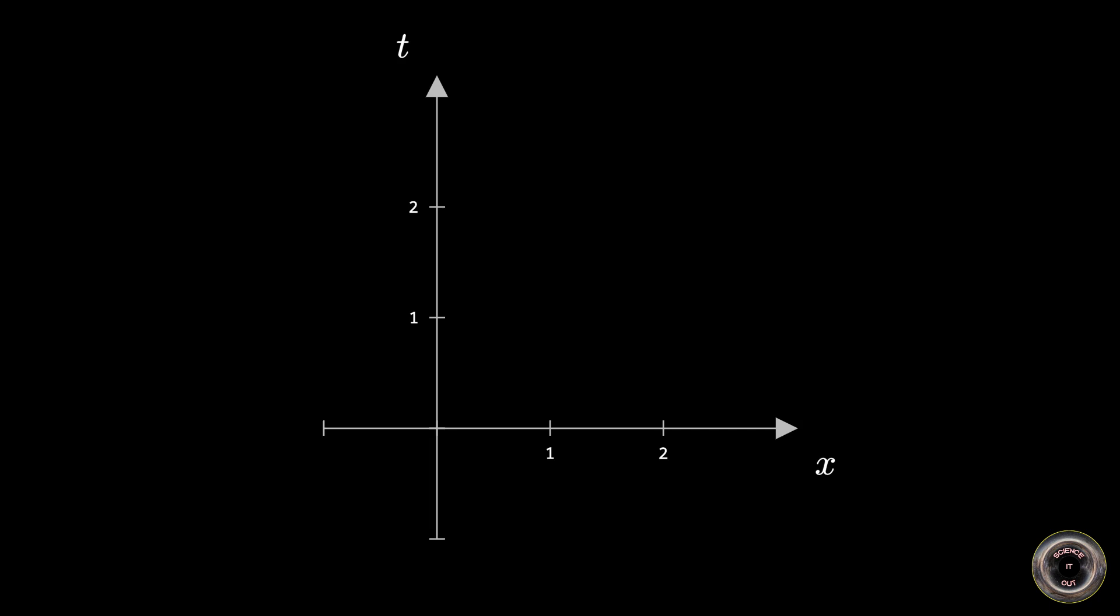Say an object was here at time 0, then here at time 1, here at time 2, and if we plot all those and all the intermediate points we get a line. This is the object's world line.